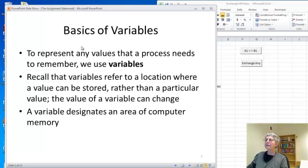We're going to talk about the assignment statement. Now, recall when we were talking about designing a process, anything that the process needed to remember, we were giving it a name and calling it a variable. And a variable in programming refers to a location where a value can be stored, not to a specific value. In other words, the value of a variable can change. You can think of it as designating a place in the computer's memory.